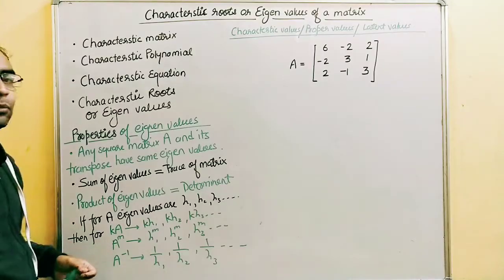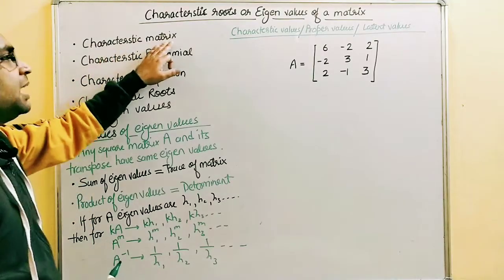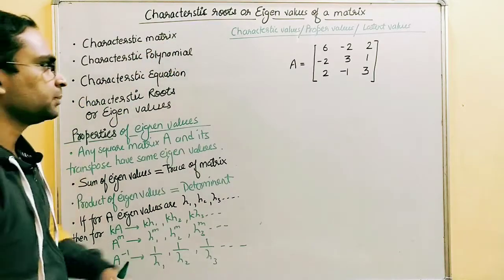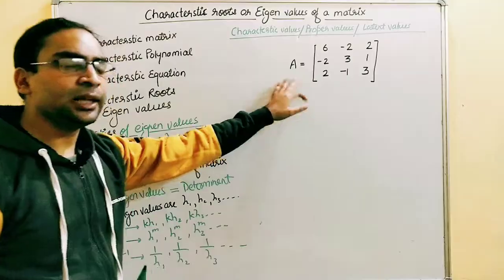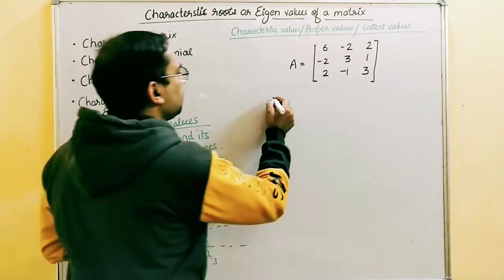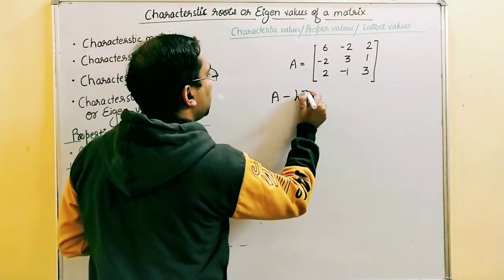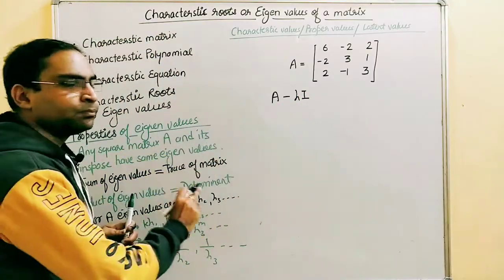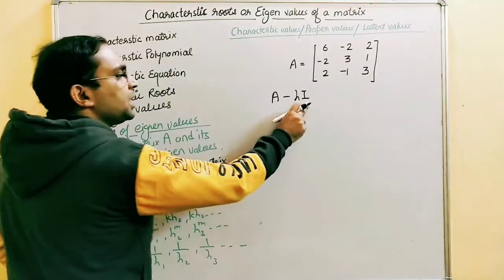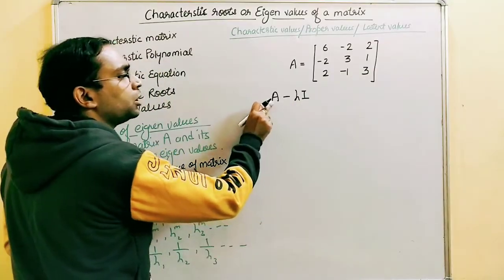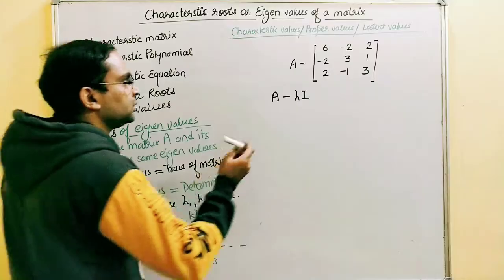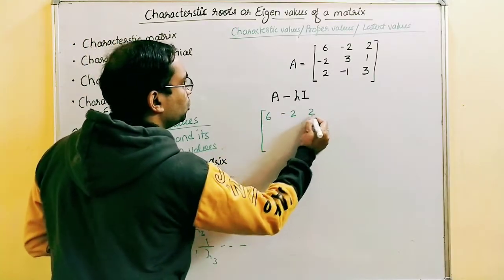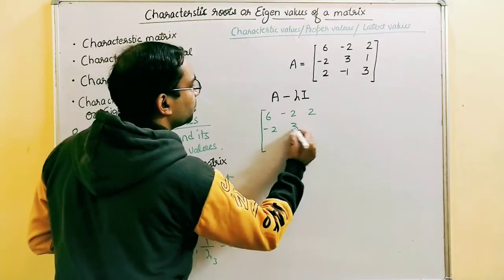Before finding out eigenvalues, we need to know some more definitions. The characteristic matrix — let's see what it is. If we have a matrix A, its characteristic matrix can be obtained by A minus lambda I, where lambda is a scalar and I is the identity matrix of the same order. Let me write the matrix A here: this is [6, -2, 2; -2, 3, 1; 2, -1, 3].